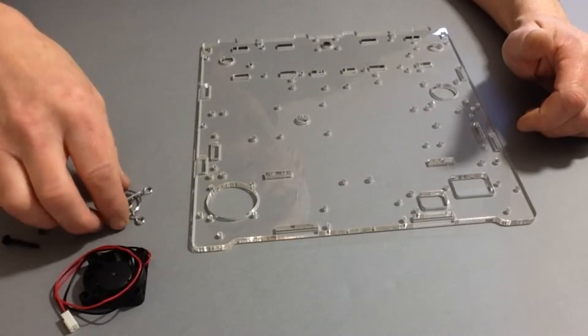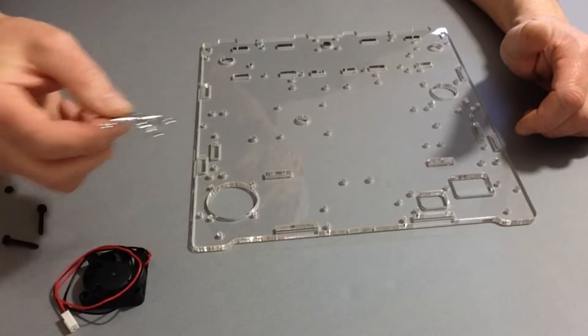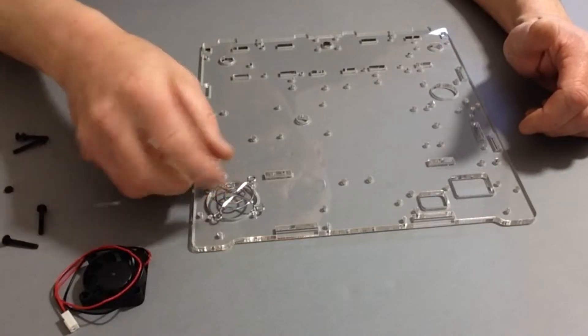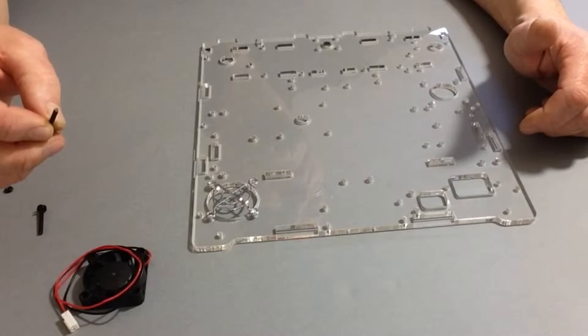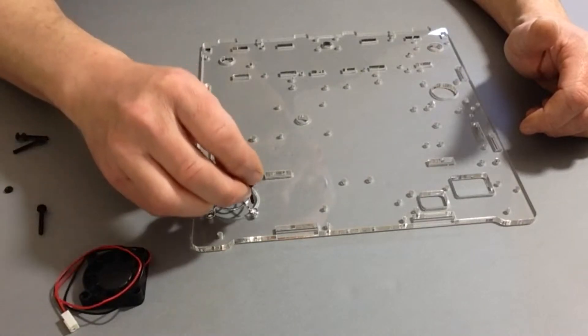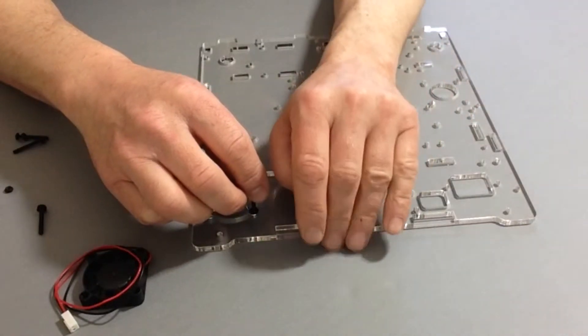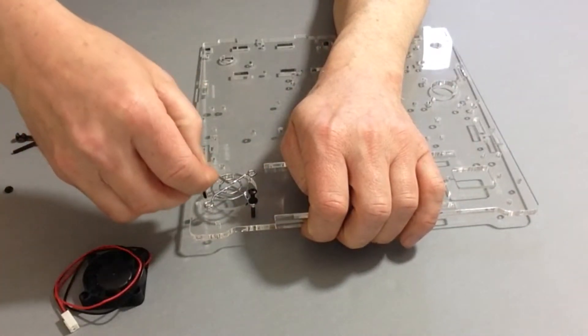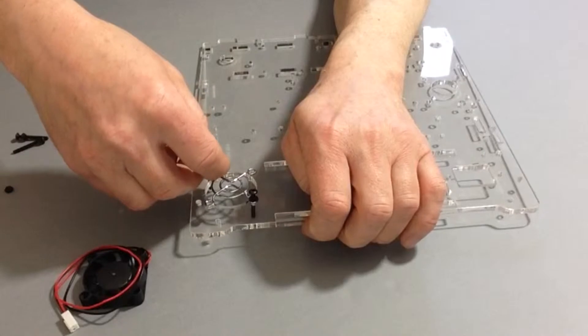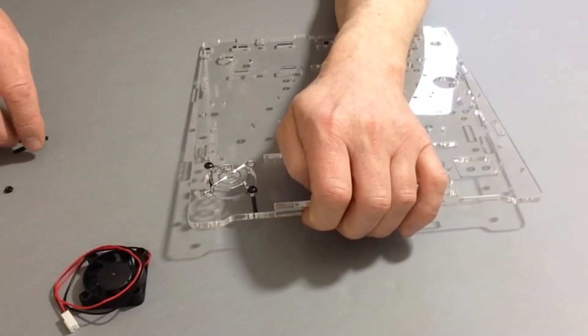Now take the fan cover and place it over this hole. Once you've done that, gently lift it up and pop four screws into the holes. You might want to do a couple at a time.